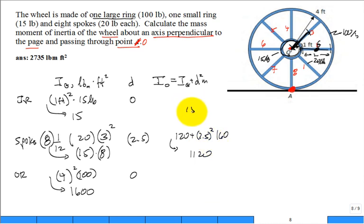So you have 15 plus 1120 plus 1,600. You add it up, and that gives me I about point O, which is 2,735 units of pound mass foot squared. Now, if somebody says, I really want it at A, this is the answer for I at O.